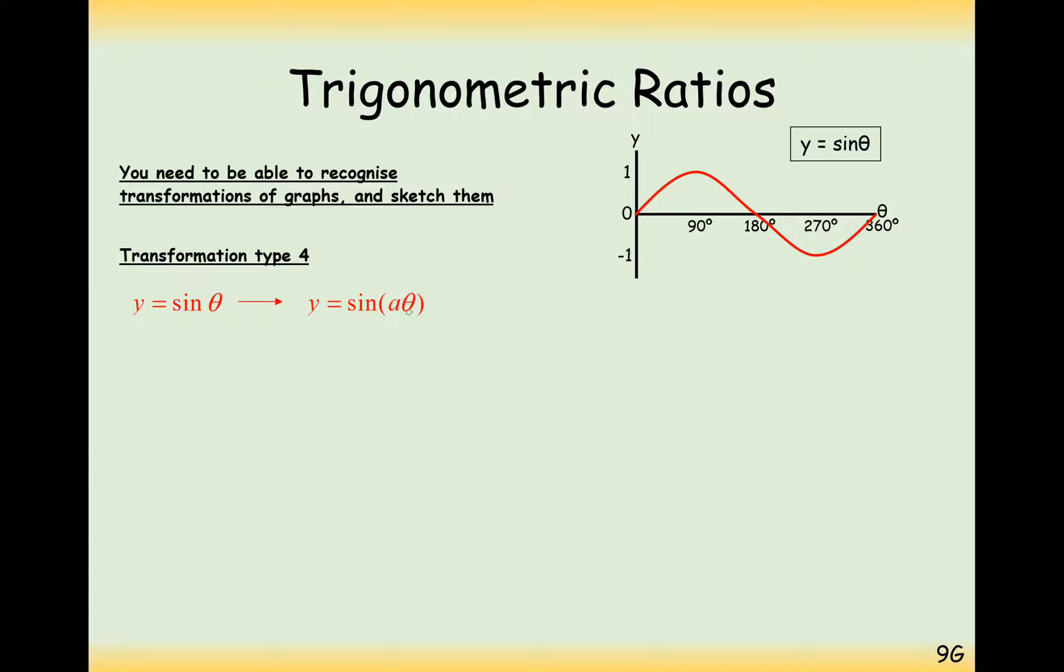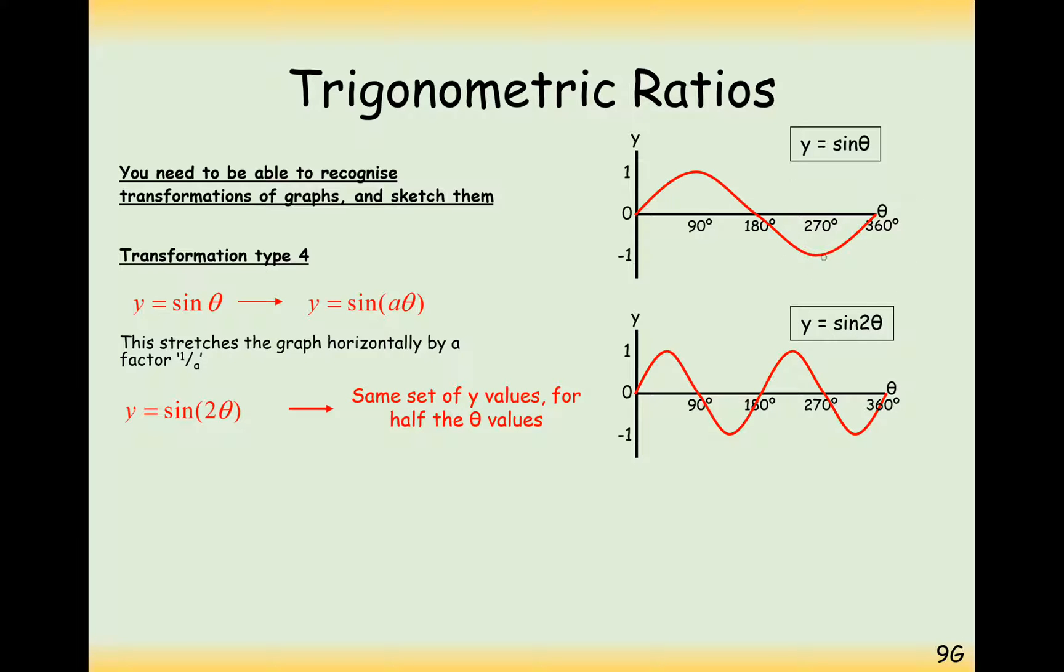Another type of graph transformation is when we're multiplying our theta angle by something. So therefore, theta needs to be 1 over a as a multiple less than it did before. So we're going to squish it in in the x-axis direction horizontally by a factor of 1 over a. So if we get something like y equals sine of 2 theta here, you would expect to stretch it out by a factor of 2, but that's wrong. You would actually squish it in by a factor of a half, so half all of the theta angles here. And we're going to have to continue on our graph and squish that in so we get up to 360 here. So where we had an intersection of 180 before, now we intersect at 90. Where we had a trough at 270 before, now we have a trough at 135, etc., etc. Work with your peaks, work with your troughs, and work with your intersections.